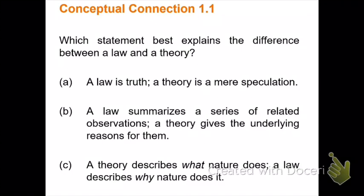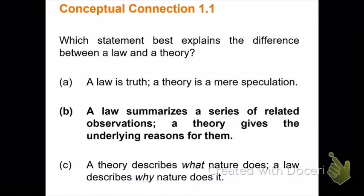Here's a conceptual question: which statement best explains the difference between a law and a theory? (A) A law is truth; a theory is mere speculation. (B) A law summarizes a series of related observations; a theory gives the underlying reasons for them. (C) A theory describes what nature does; a law describes why nature does it. The answer is B.